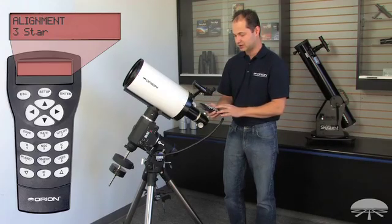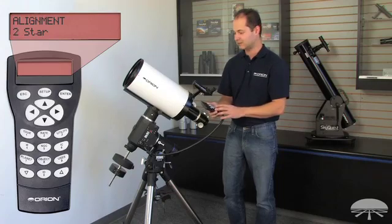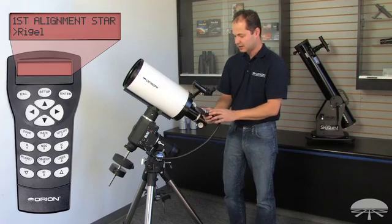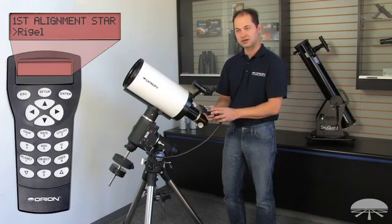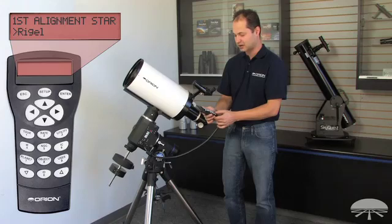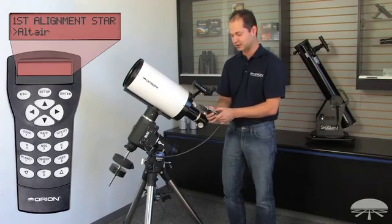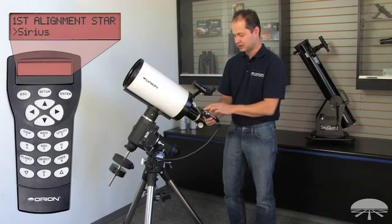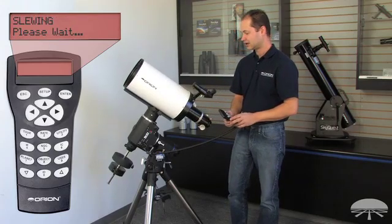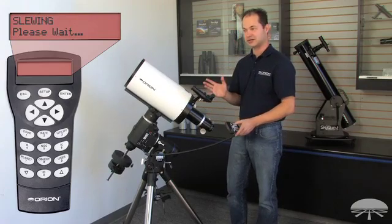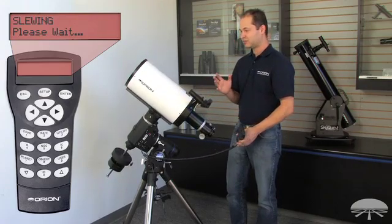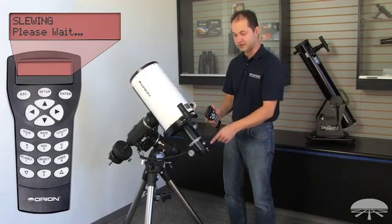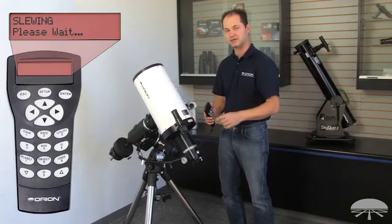I'm going to choose two star for this demonstration just because it's a little quicker. So two star alignment, enter. Then it asks you for a star. And it'll pick several stars that are going to be up for your time of night and your location. So I will pick Sirius as my first star. I hit enter. The telescope will go to where it thinks Sirius is. It will be pretty close depending on how accurately polar aligned you are, but it will probably be a little bit out of the field of view of the scope, maybe closer to the field of view of your finder scope.